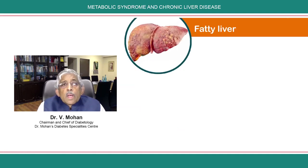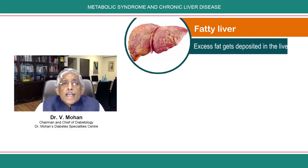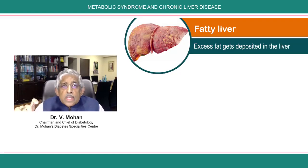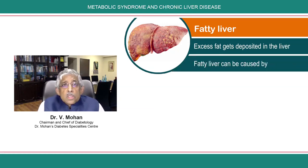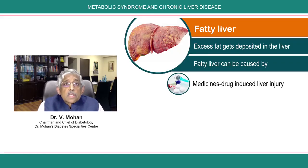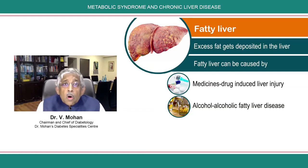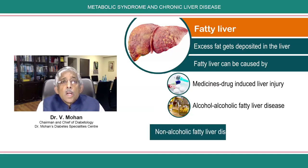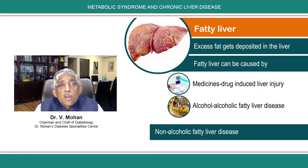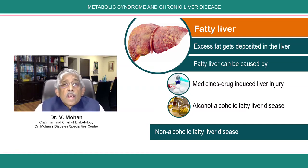When you have excess adiposity, this excess fat in the body gets deposited in the liver very easily, and that is what is called fatty liver. Fatty liver can come from many causes — medicines can produce drug-induced fatty liver, and alcohol is a common cause. However, all these have been surpassed by a much more common cause: non-alcoholic fatty liver disease, or NAFLD, where by definition alcoholism is ruled out and you still have the fatty liver.